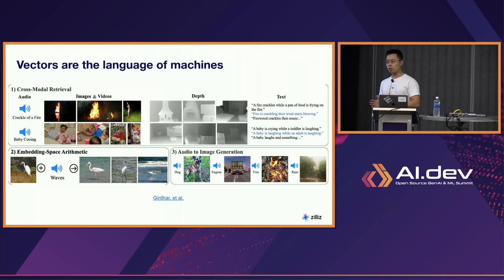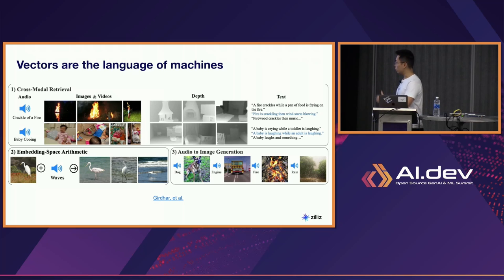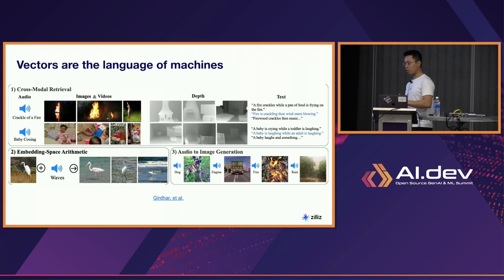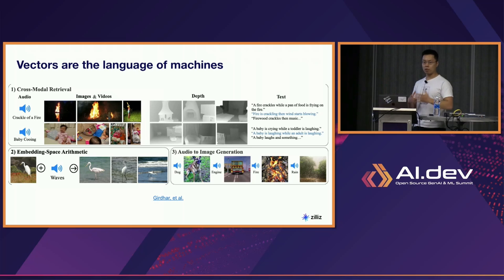The analogy I like to use: what makes these vectors so incredibly powerful is that they really encode the semantics of your input data, depending on how your embedding model is trained. This is from the ImageBind paper, released maybe about half a year ago. One of the really interesting things you can see is that you can do more than just search for nearest neighbor vectors — you can do cross-modality retrieval. If I have audio that I turn into a vector, and images and video that I turn into a vector, I can embed those into the same space and they represent semantically similar things. So the crack of a fire, if I retrieve related images and video, I get images of a bonfire or a fireplace.